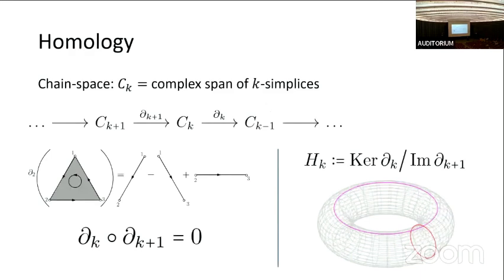We can begin to define homology, which is a type of topology that studies holes of various dimensions in the space. We defined these k-simplices before, and if you take their span — linear combinations over complex numbers — we get these Hilbert spaces called chain spaces. Between the chain spaces are boundary maps. The boundary maps take a combination of simplices and output the boundary, which is one dimension lower. So for a triangle, the boundary gives you the sum over the edges going around it.